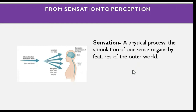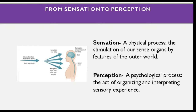Sensation is a physical process — stimulation of our senses by features of the outer world. Perception, on the other hand, is a psychological process responsible for organizing what we perceive from the outside world. Sensation comes from our five senses, and perception is how we interpret things based on what we sense. That is the difference between sensation and perception.